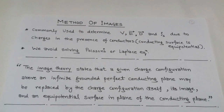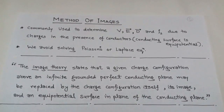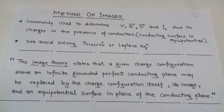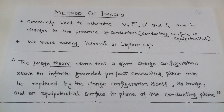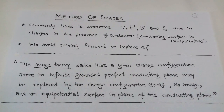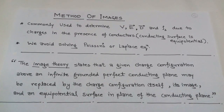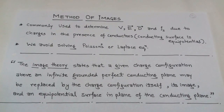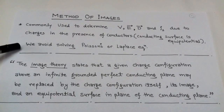The topic is the method of images. The method of images is another way to determine the electric potential V, electric field intensity E, electric flux density D, and surface charge density rho_s due to charges in the presence of a conductor. With the help of the method of images, we can avoid solving Poisson's or Laplace's equation.